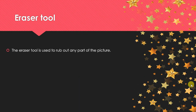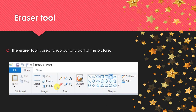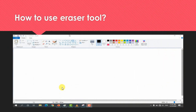What is the eraser tool? The eraser tool is used to rub out any part of the picture. Just as when you write in your notebook and make a mistake you use an eraser, similarly when you draw in paint and need to remove or rub out a part, you use the eraser tool. Click on it and the eraser will be selected. Where the mistake is in your drawing, drag the eraser over it and it will be erased.